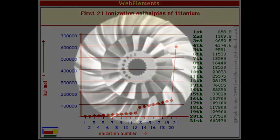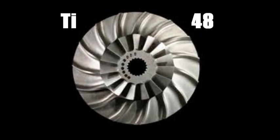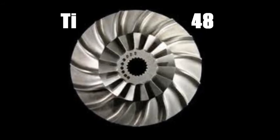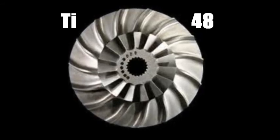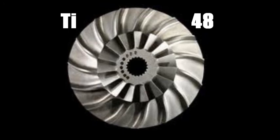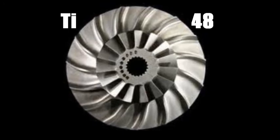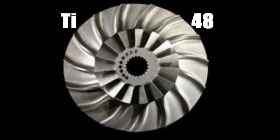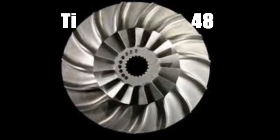Next we will explore the isotopes of titanium. Titanium has many common isotopes found in nature. Ti-48 is the most abundant, with an abundance of 73.72%. The other isotopes — Ti-46, Ti-47, Ti-49, and Ti-50 — all have abundances of less than 9%.